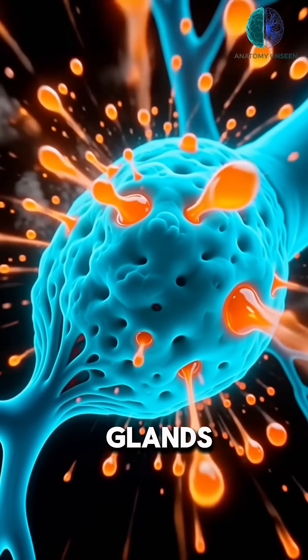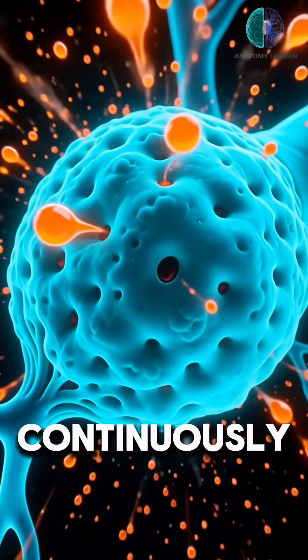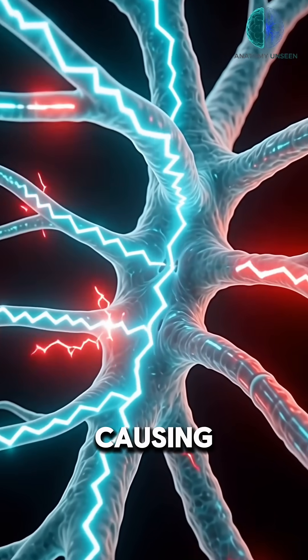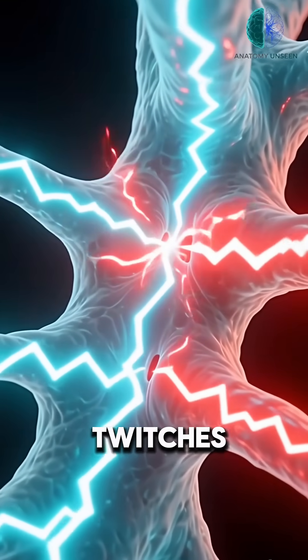Your adrenal glands are forced to pump out emergency hormones continuously. Nerve signals become chaotic, causing uncontrollable internal jitters and muscle twitches.